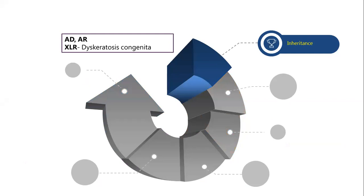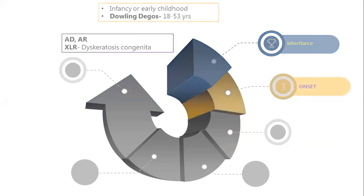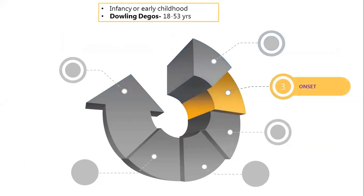The second thing you should look at is the age of onset. Usually it's in infancy or early childhood. Even if you look at congenital disorders, anything less than two years onset is congenital. Most of them are in that particular age group, except Dowling-Degos that occurs at a later age group.